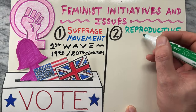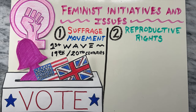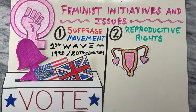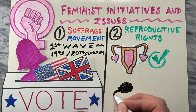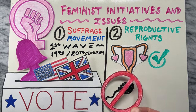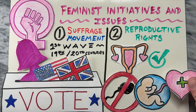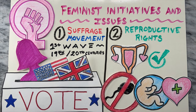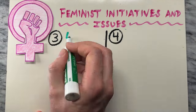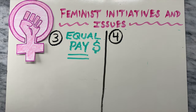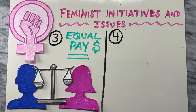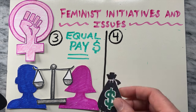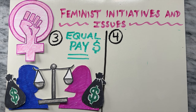Next is reproductive rights. Feminist activism has played a crucial role in advocating for women's reproductive rights, including access to contraception, safe and legal abortion, and comprehensive health care. Third is equal pay. There are ongoing feminist efforts aimed to address the gender pay gap, advocating for equal pay for equal work, and challenging systemic discrimination in the workplace.